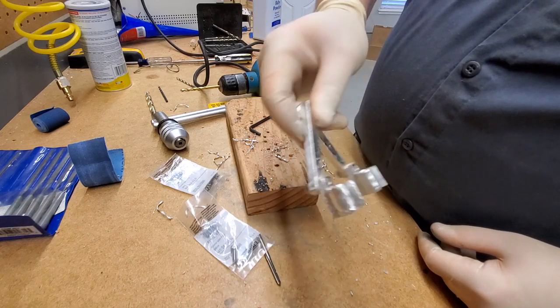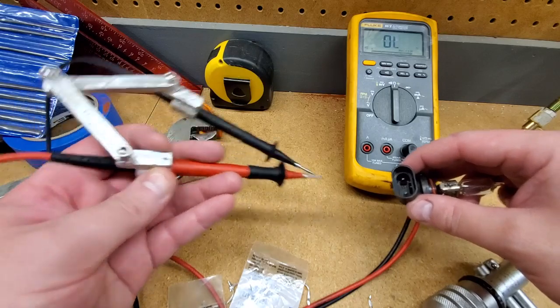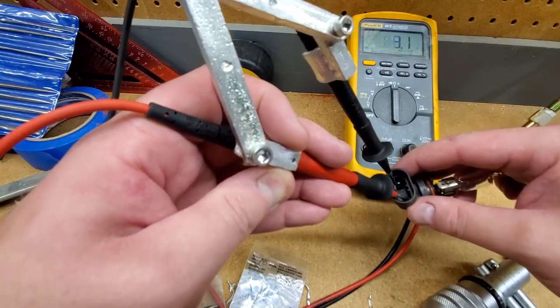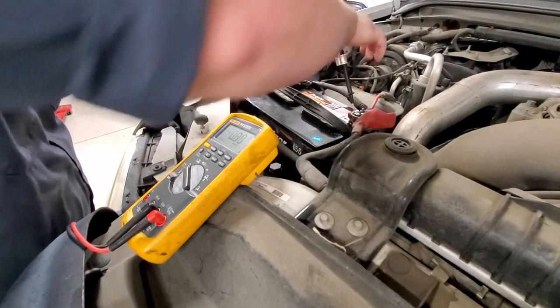I had some brass thumb screws on order but they never arrived, so standard cap screws are used for now. The holder is wonderful. It allows for one-handed use for testing sensors and checking circuits with probe points that are around 10 inches from each other.